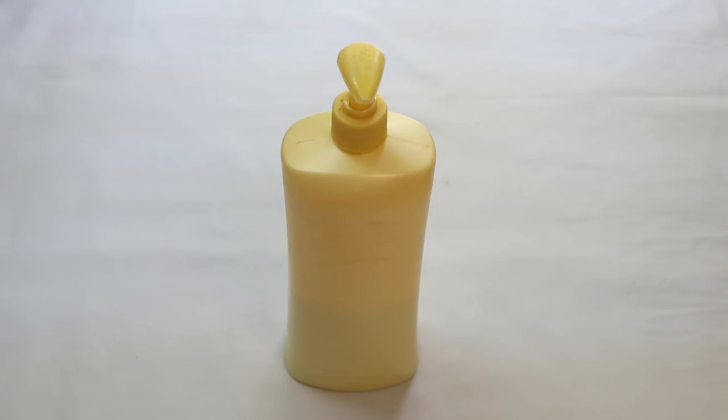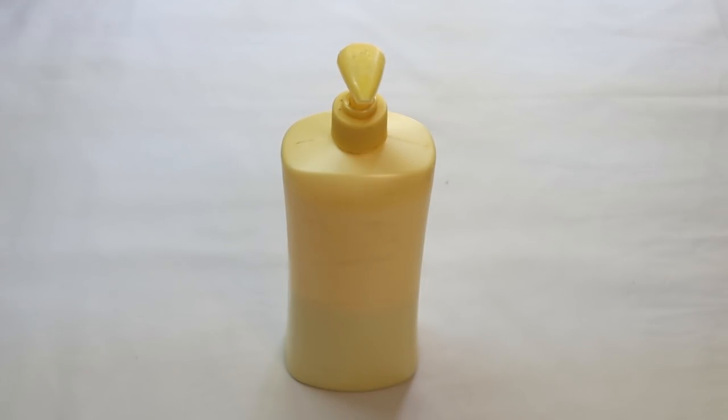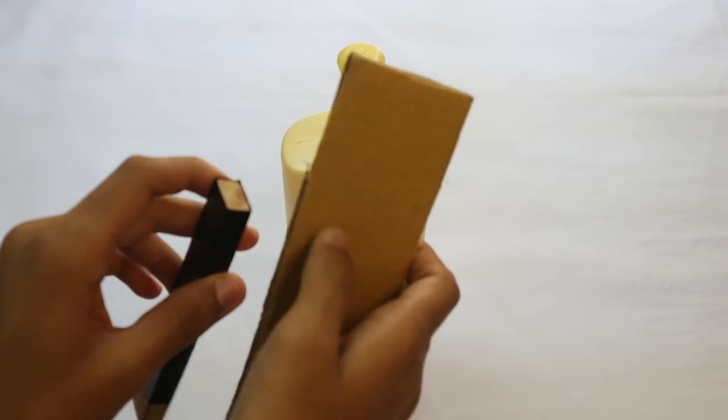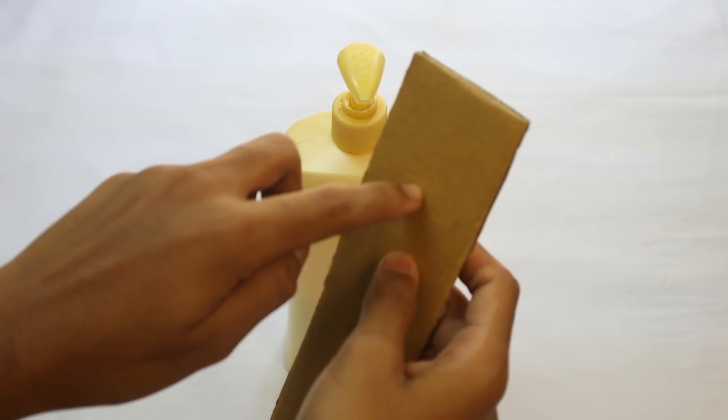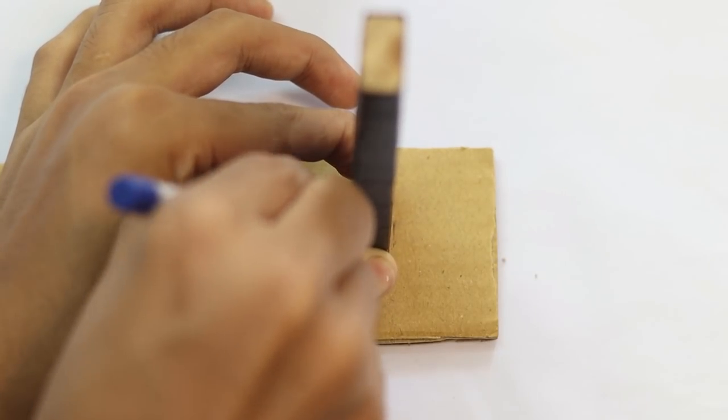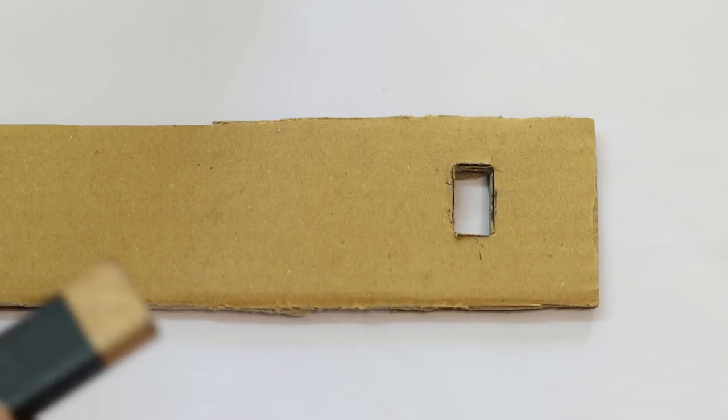To make your automatic dispenser, first take your normal dispenser and you will need cardboard and a wooden stick. You have to make a small hole that fits the wooden stick in the cardboard. Now let's make the hole for the wooden stick. Now cut out that part. Now I have made the hole.